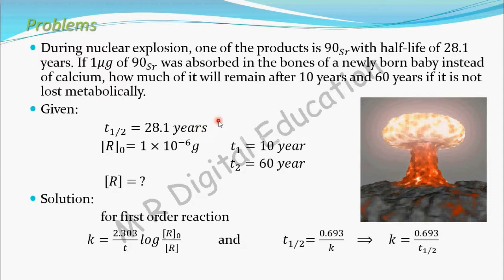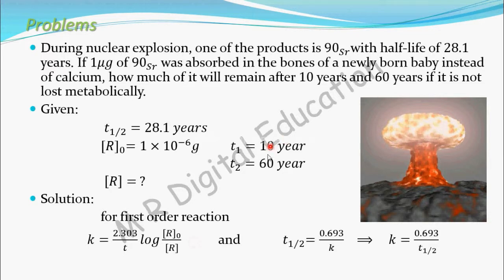For a first-order reaction, we also know that t½ equals 0.693 divided by k. From this, we can get the value of k: k equals 0.693 divided by t½. We substitute this k into the rate equation to find the concentration R after 10 years.